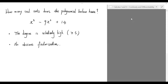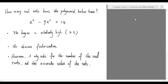Secondly, it does not seem to have any obvious factorization that we could apply, so we do not anticipate obtaining any nice and neat solution, like an integer, from some factorization of the polynomial into a product of linear polynomials as we usually do in a simpler problem. However, all it asks for is just the number of real roots, not the accurate value of the roots. Therefore, we may not even need to solve this equation to answer this question.